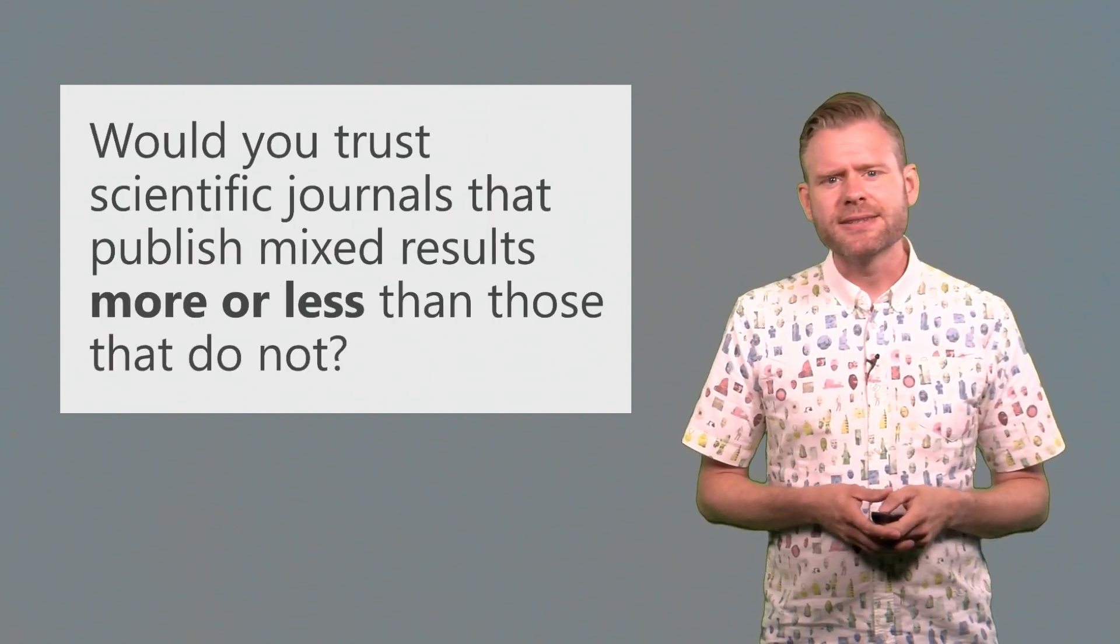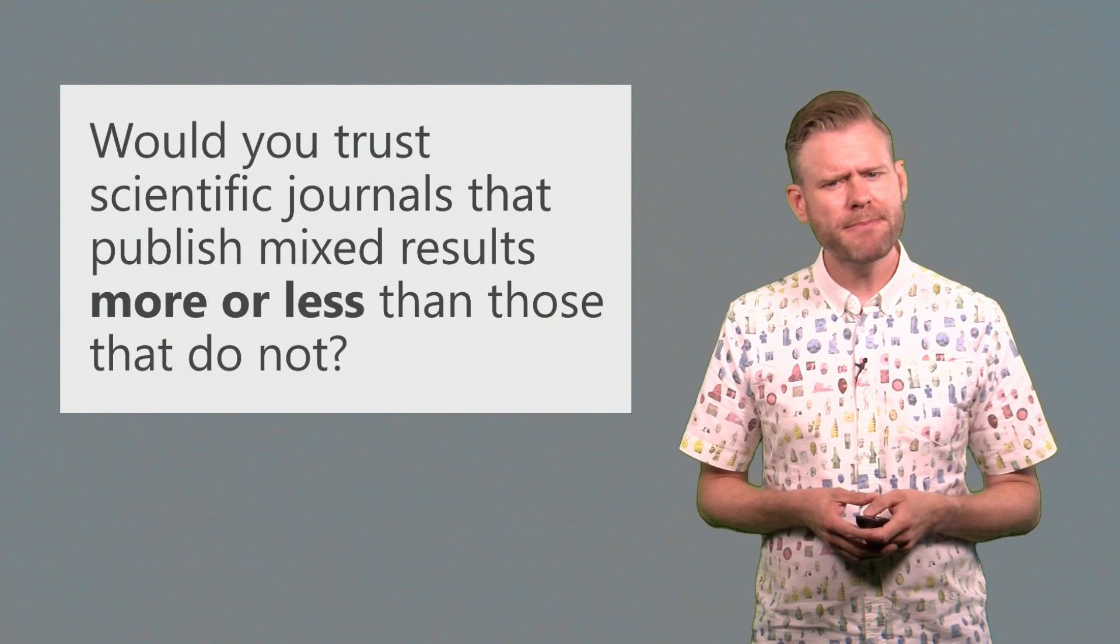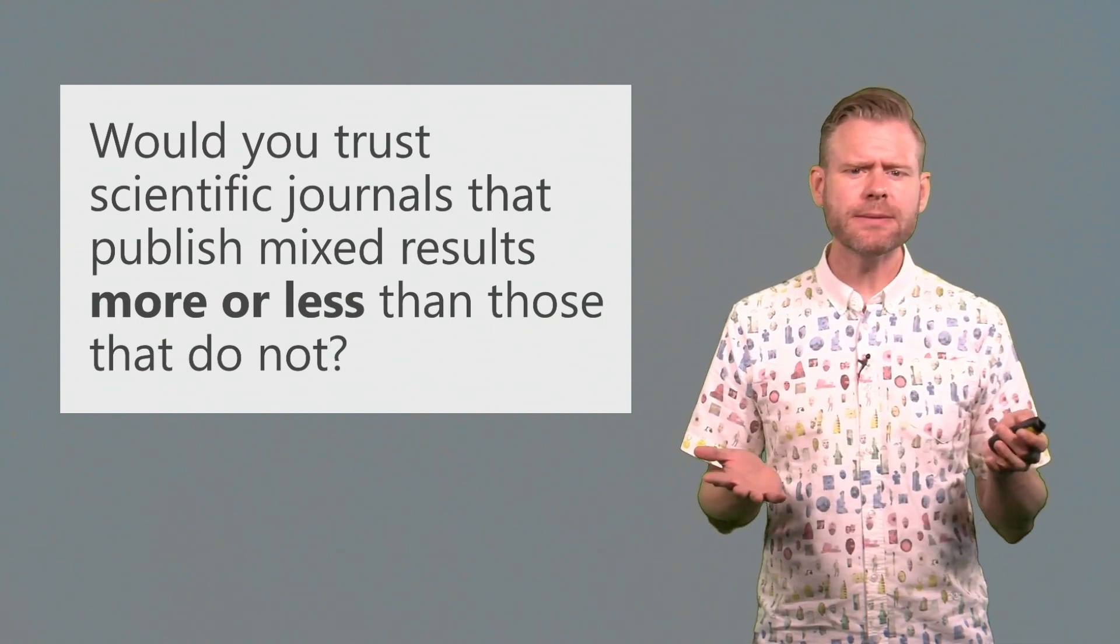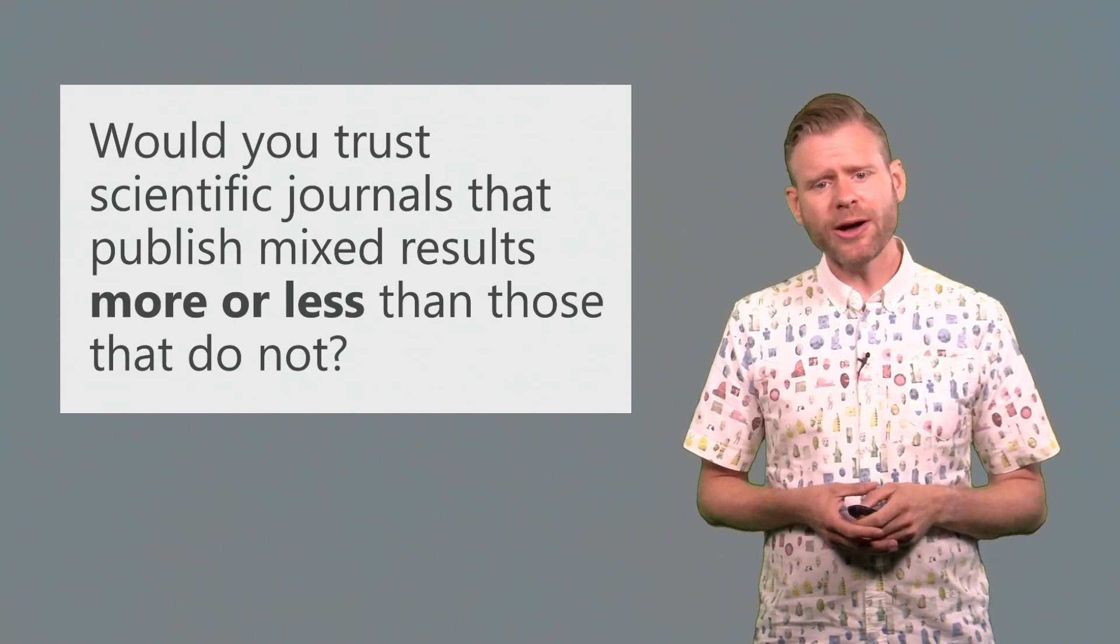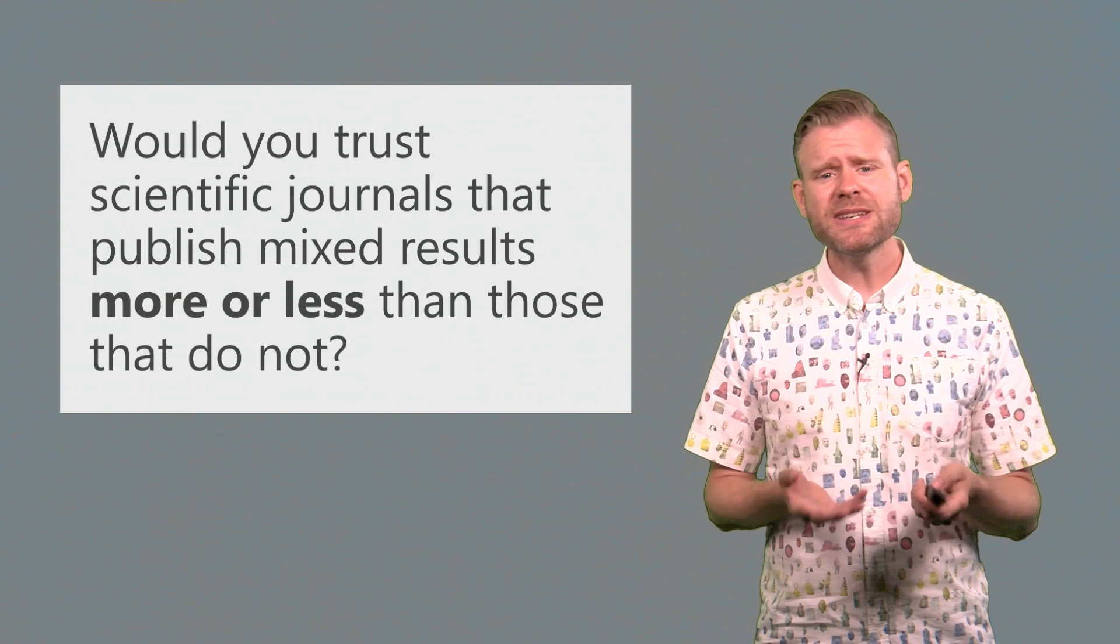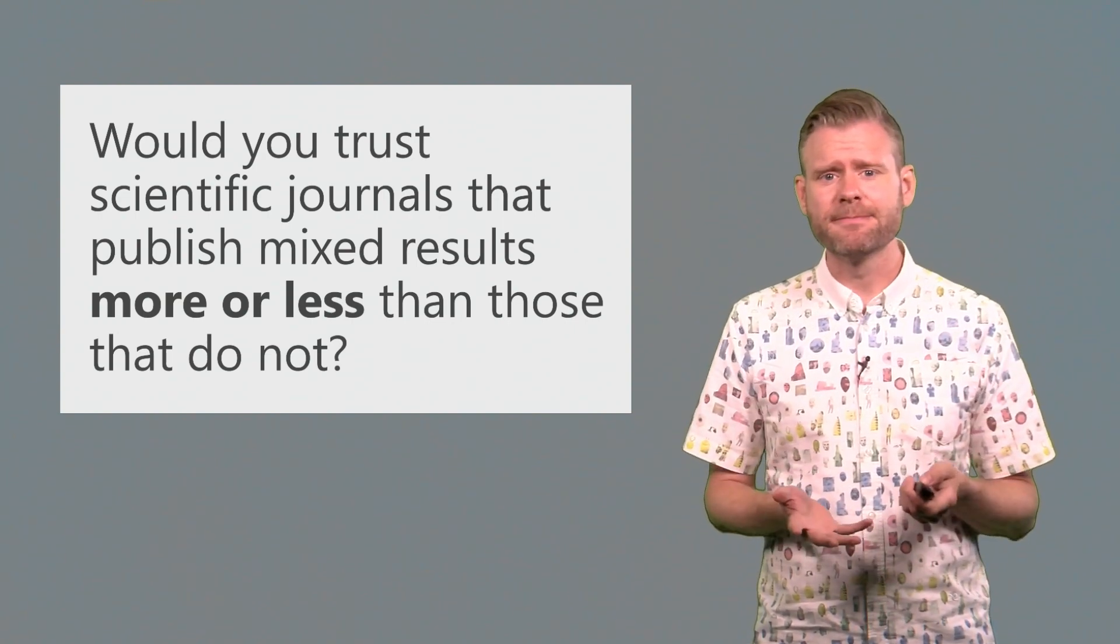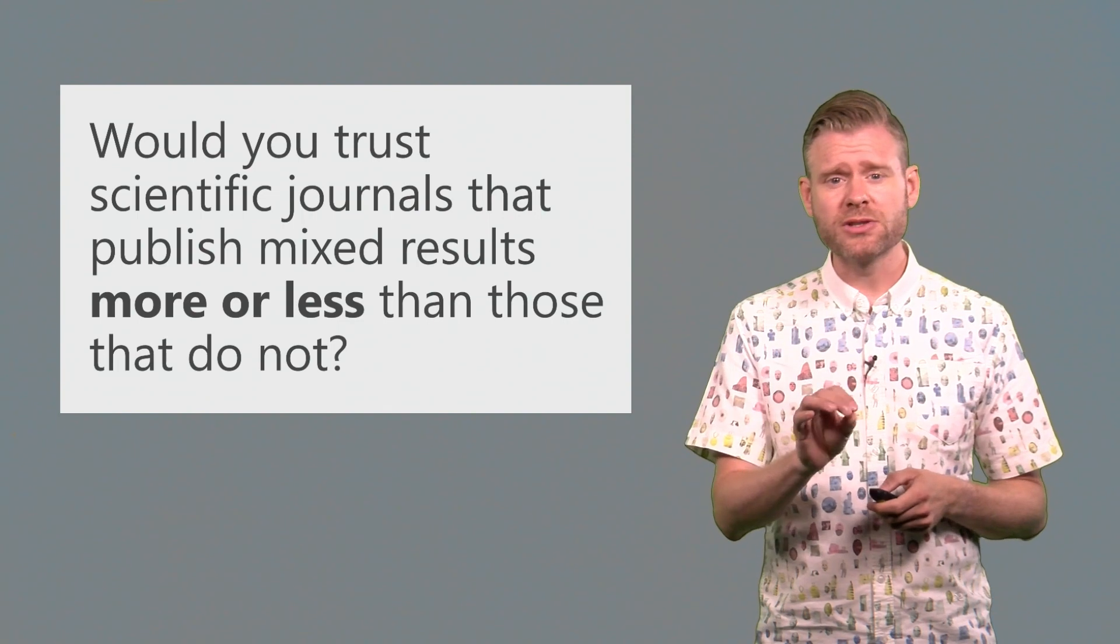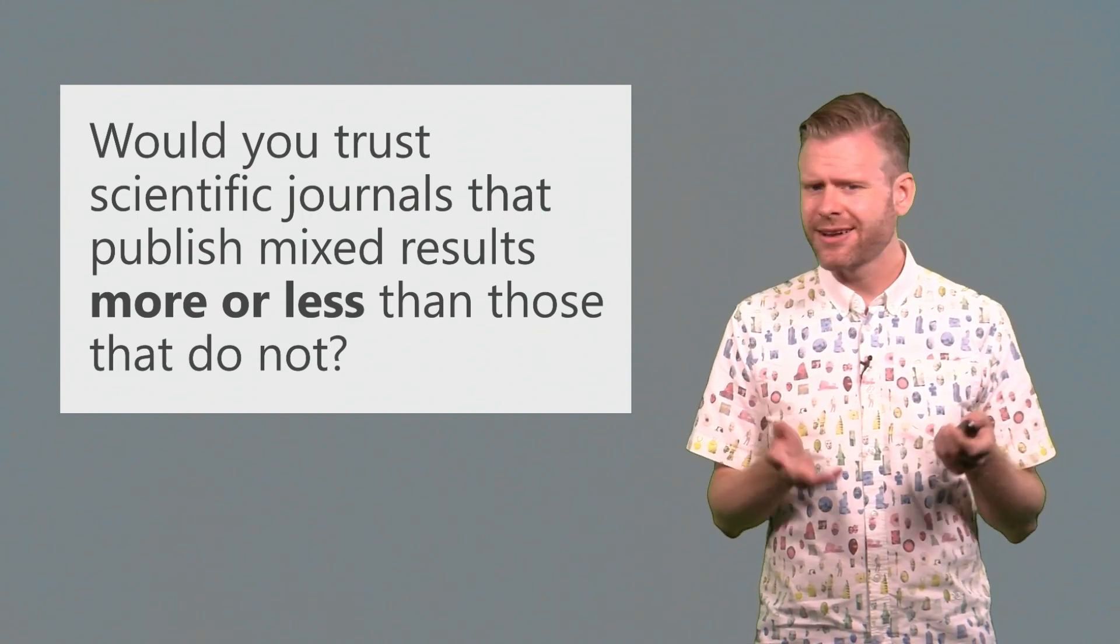So after you've realized this, take a moment to think about this question. Would you trust scientific journals that publish mixed results more or less than journals that only publish statistically significant results? I would say that if we have a scientific journal that actually represents reality, it gives me a slightly higher trust in that what they publish is actually like reality. But if I see scientific journals where everything that is published and all lines of multiple studies yield significant results, I know for a fact that it can't be true.